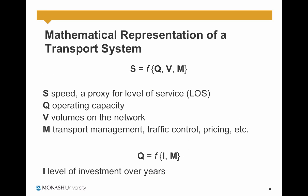We can represent the transport system from a demand and supply perspective using some mathematics. Assume S is speed, or a proxy for level of service, or a proxy for supply. Q represents operating capacity, V represents volumes on the network, and M represents transport management strategies — traffic control, pricing, etc. We can define speed, or supply, as a function of Q, V, and M. Speed is dependent on operating capacity, volume on the network, and the type of transport strategies implemented in the system.